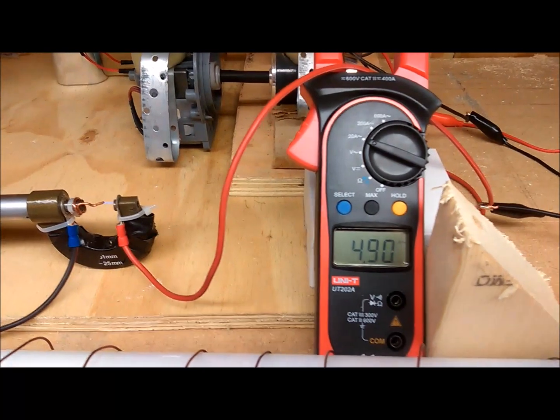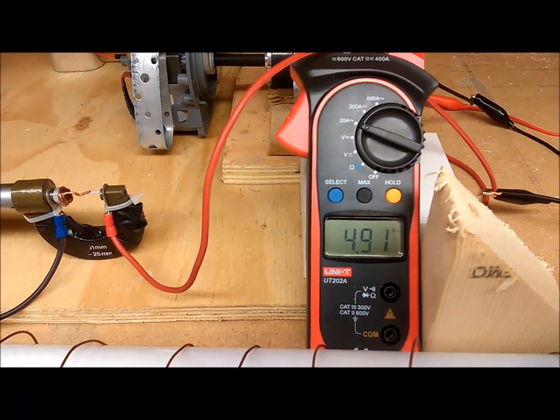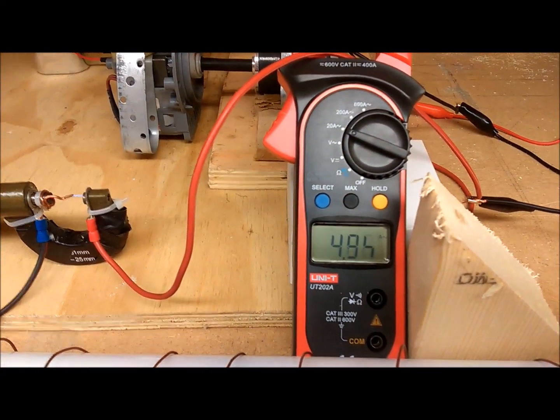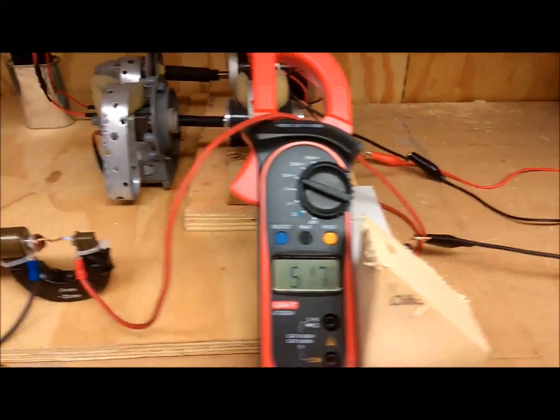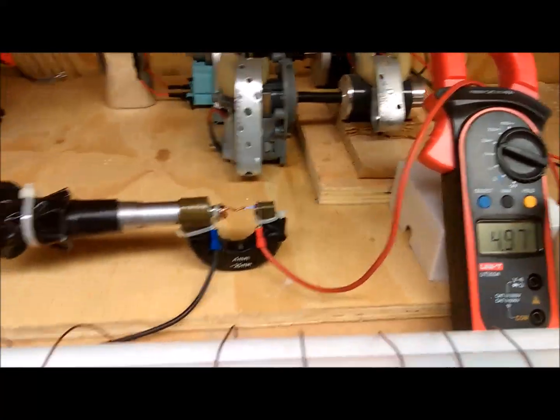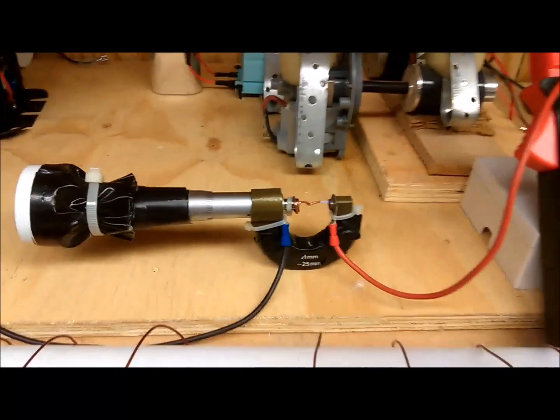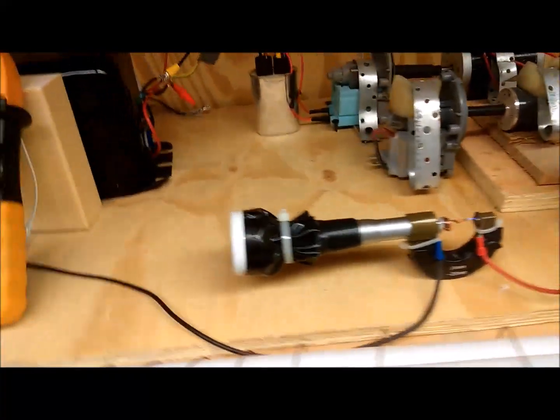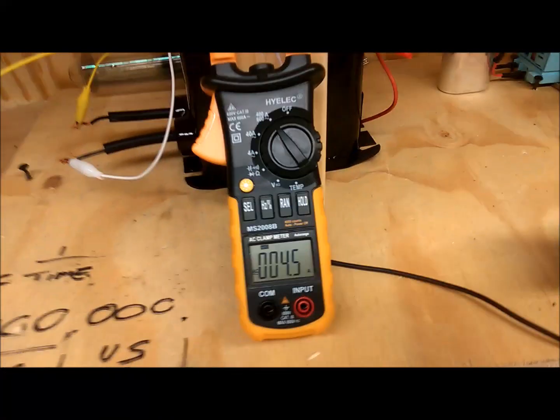An amp reading here on my new amp meter: 4.7 to 4.8 amps at this point, which is to the right of the spark gap. We've got the spark gap up. To the left of the spark gap, we've got more or less the same.